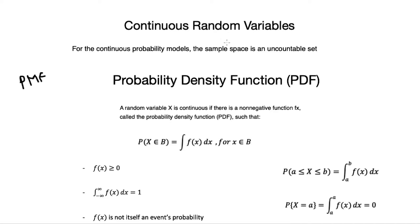For continuous random variables, we define the probability density function, or PDF, denoted f(x) or fx. We can obtain the probability that X lies in an interval B by integrating f(x) over that interval, since X is continuous and we define probabilities over intervals rather than at specific points.